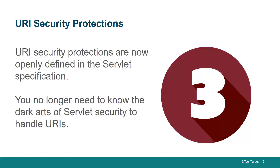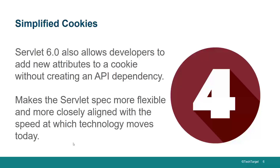Well, we've got that all built right into the specification now. It is standardized, it is uniform across implementations, and it's not something that we have to roll our own with anymore. We can use the Servlet API to help us with all of the URI security protections that our applications need. Now, if you're a seasoned Servlet and JSP API developer, you have run into issues with cookies. The Servlet 6.0 API now allows developers to add new attributes to a cookie without creating underlying API dependencies.